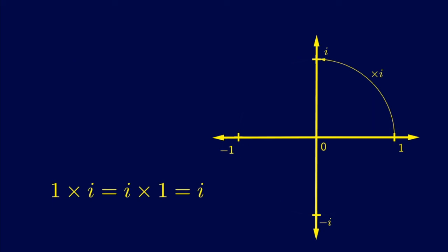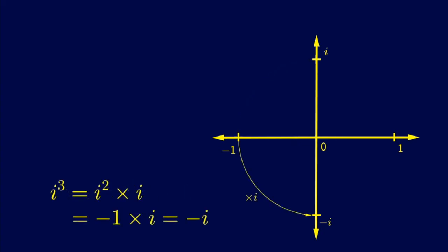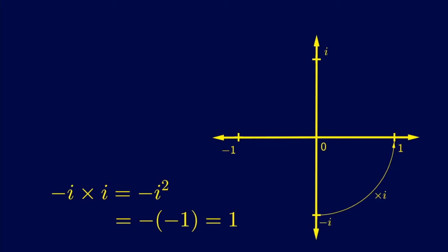Just as multiplying by negative 1 is represented geometrically by a half turn rotation, multiplying by i is a quarter turn. This means that i times i, or i squared, is negative 1. Multiplying by i again, it's negative i, which makes sense algebraically too, as i cubed is i squared times i, which is negative 1 times i, which is negative i. Finally, multiplying by i one more time gets us back to 1.